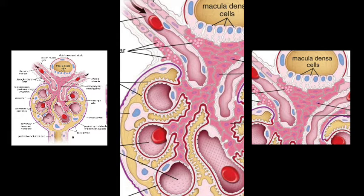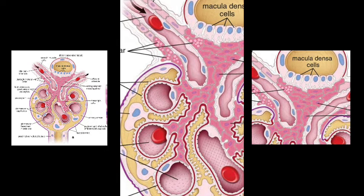The juxtaglomerular cells are innervated by unmyelinated adrenergic nerve fibers. Some authorities regard them as modified myoepithelial cells since they contain contractile elements in the cytoplasm. Some also believe that erythropoietin, the hormone secreted by the kidney, is also secreted by the juxtaglomerular cells.